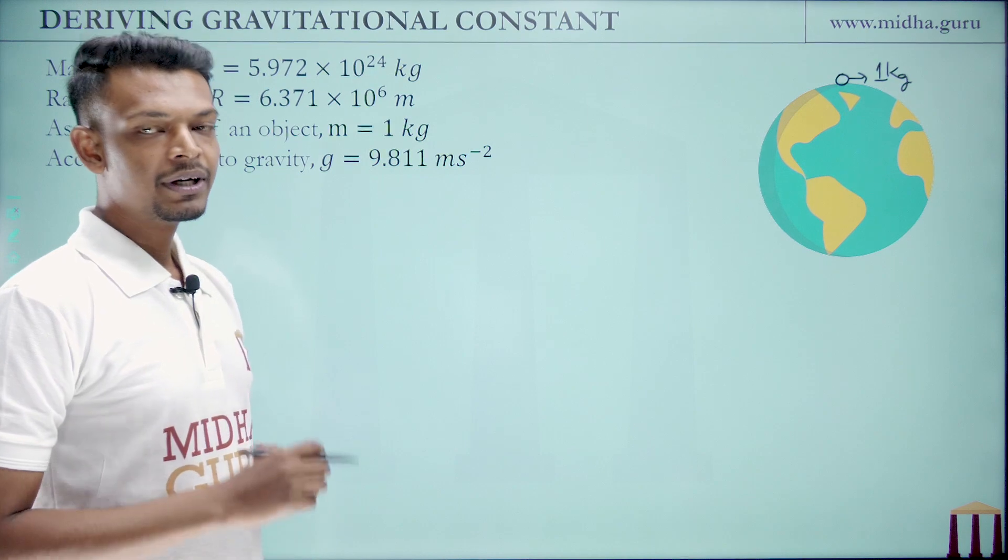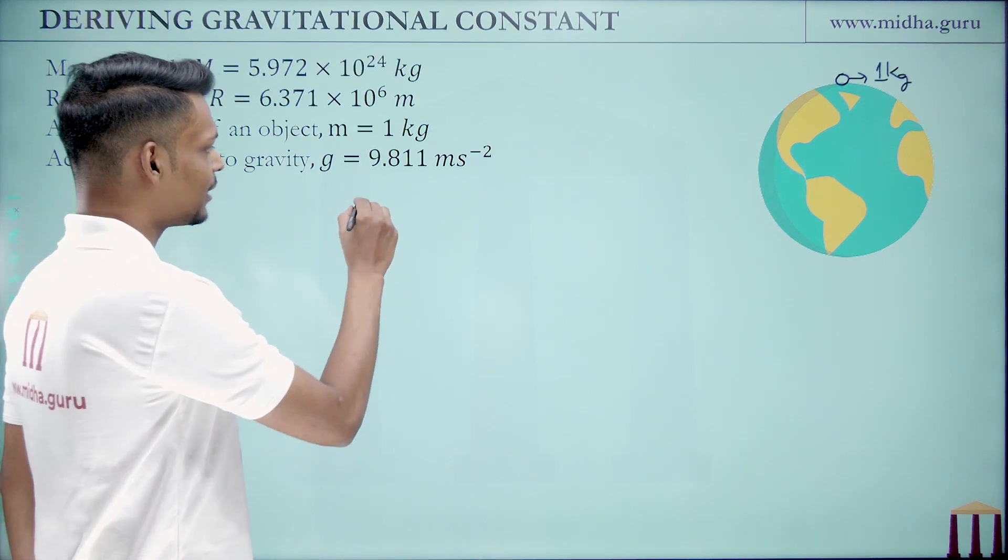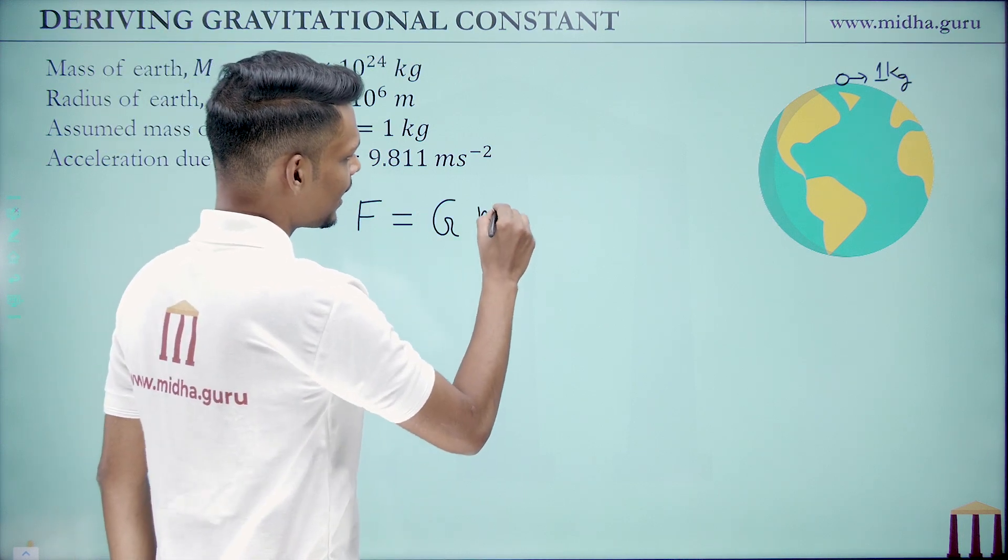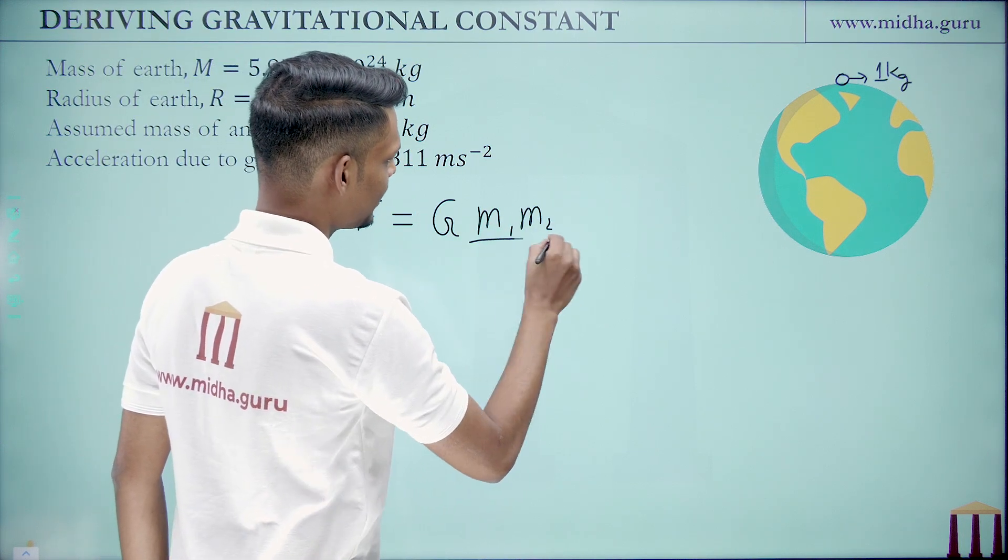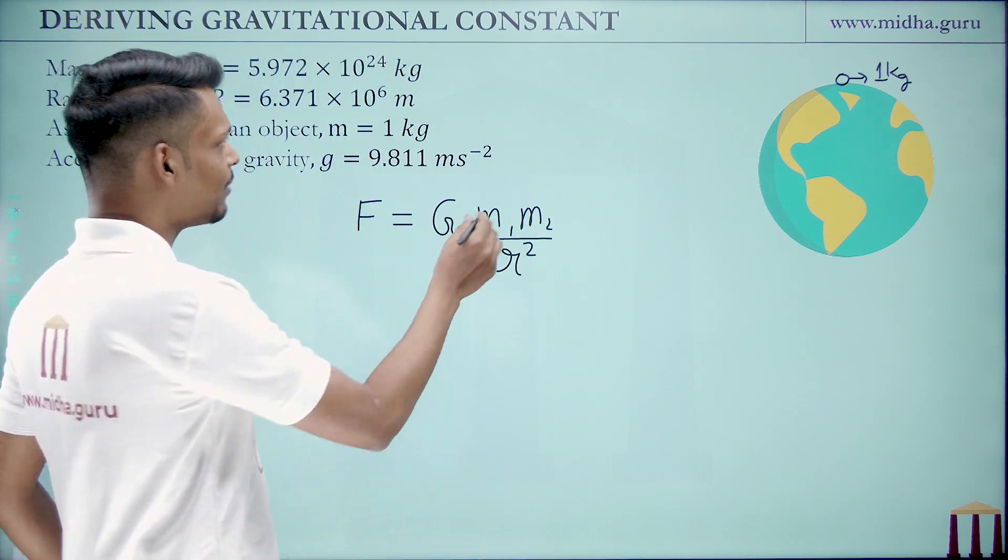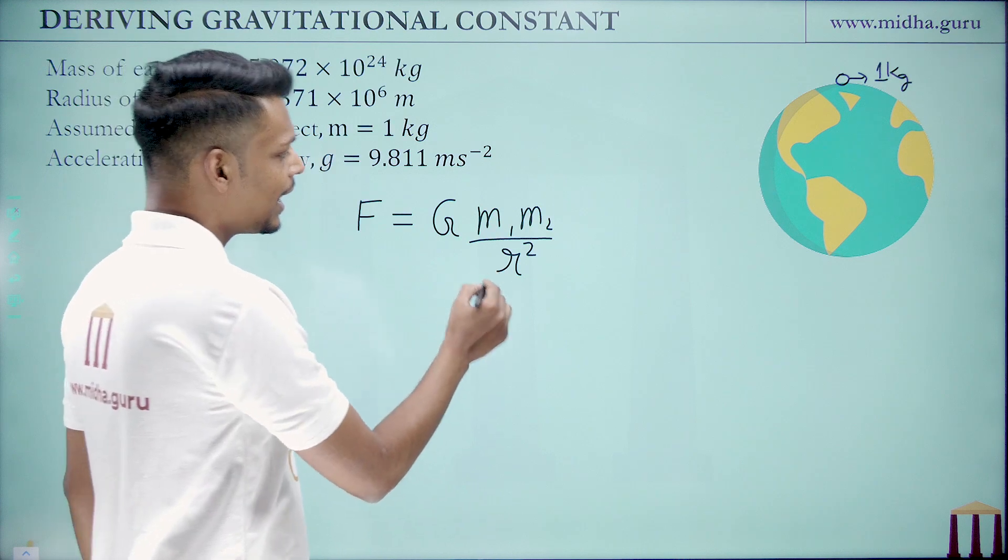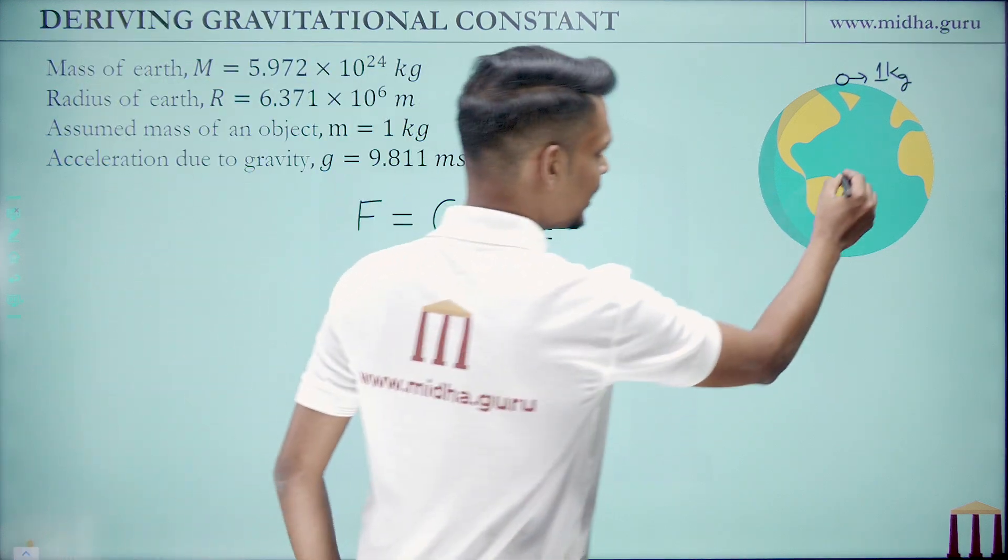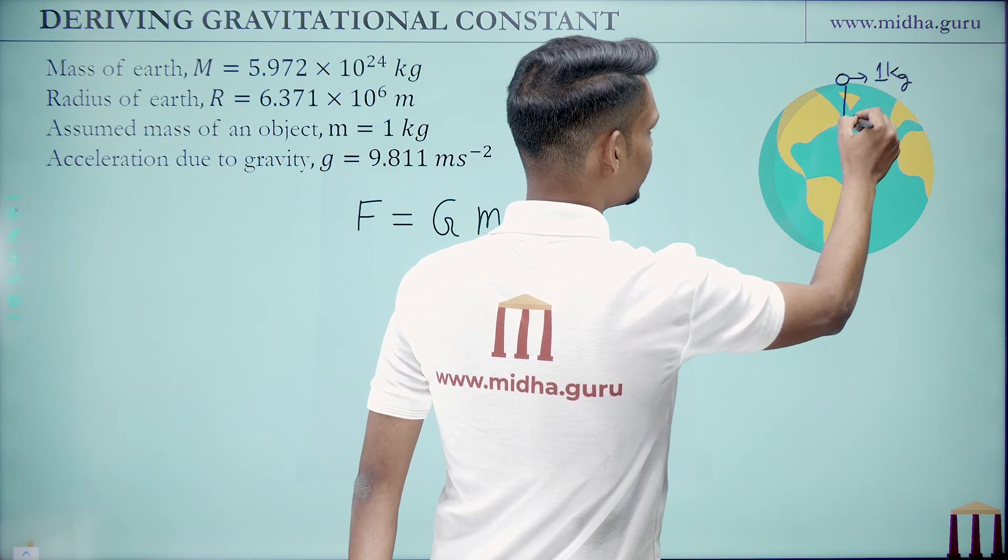Now if you remember, using the gravitation's law, we can write that force on an object is actually equal to G m1 m2 by r square. Now here in this scenario, we can say that m1 is the mass of Earth, m2 is the mass of object, and r square is the distance between these two objects which in our case is actually the radius of the Earth.